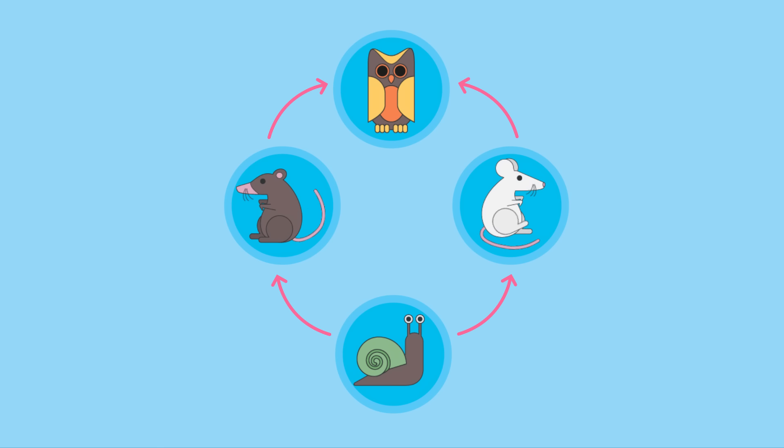This means that when a food web is altered, it has different effects on different populations. If one species goes extinct, it can affect the entire system with unpredictable results.